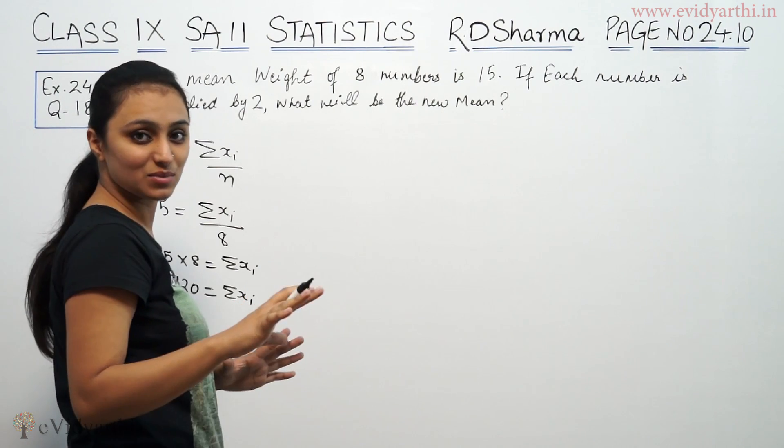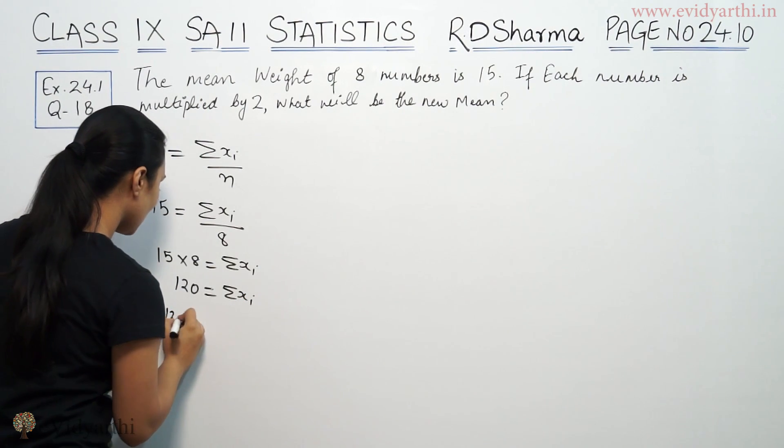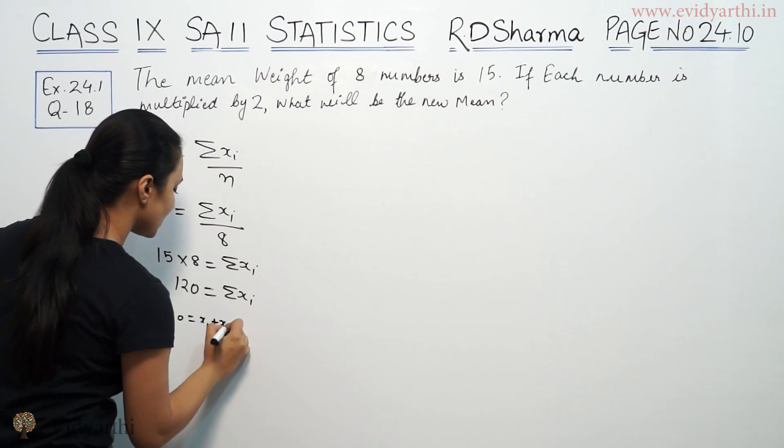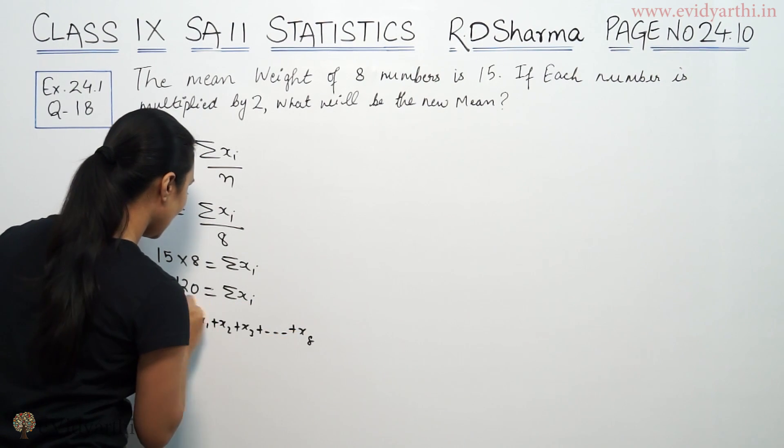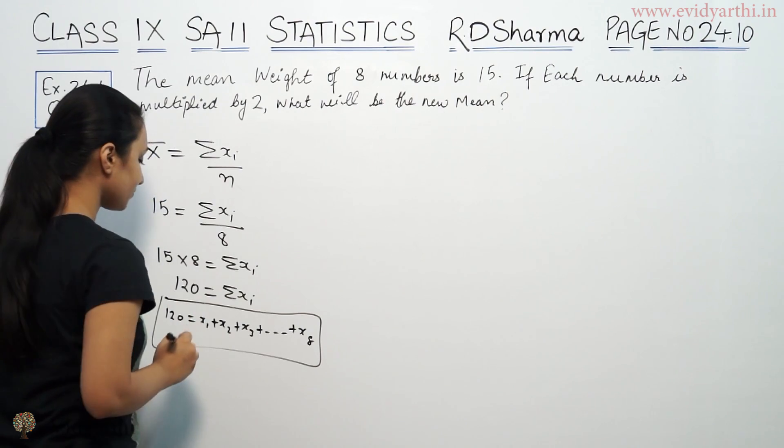Summation xi means 8 terms ka sum given. That means, we will write x1 plus x2 plus x3 plus dot dot dot plus x8. 8 terms ka sum given.